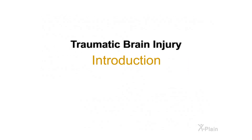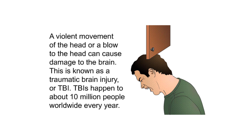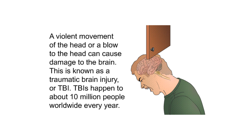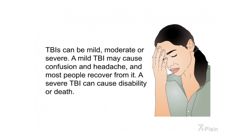Traumatic brain injury — introduction. A violent movement of the head or a blow to the head can cause damage to the brain. This is known as a traumatic brain injury, or TBI. TBIs happen to about 10 million people worldwide every year. TBIs can be mild, moderate, or severe. A mild TBI may cause confusion and headache, and most people recover from it. A severe TBI can cause disability or death.